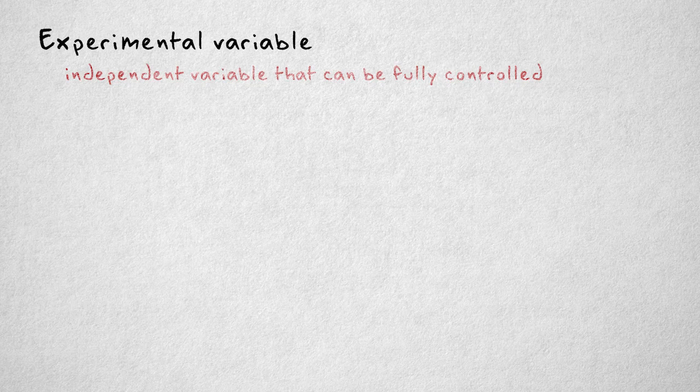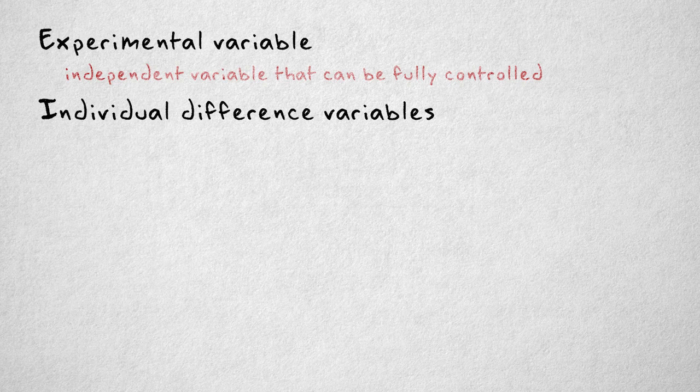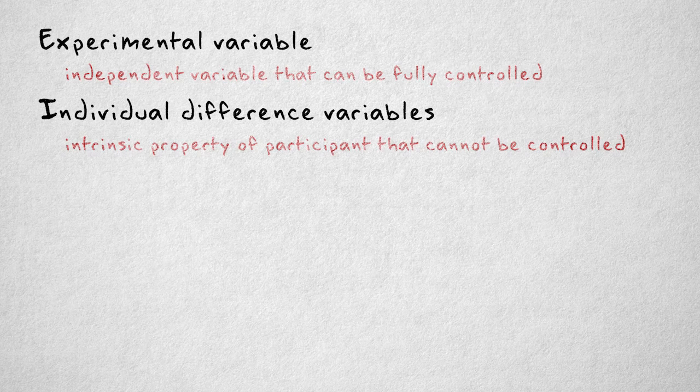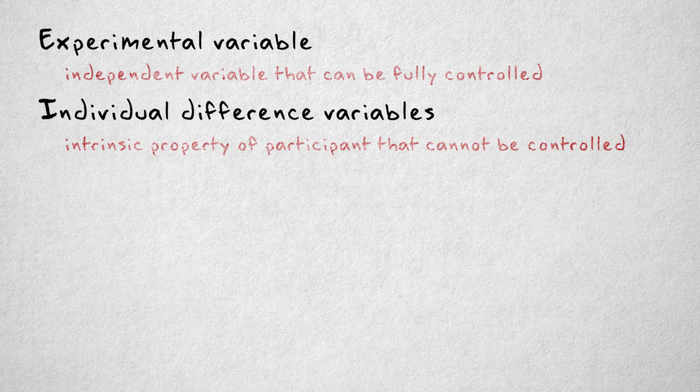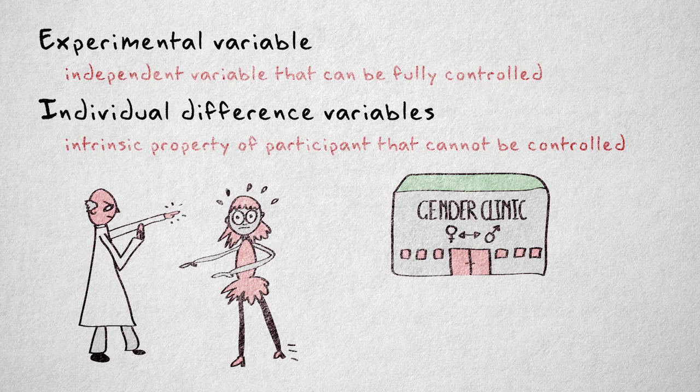Not all variables can be manipulated. Such variables are called individual differences variables, because they're an intrinsic property of the participant. Properties like age or gender, for example, are not under the researcher's control. We can't send participants to a gender clinic and ask them to undergo a sex change so that we can investigate the effect of gender on aggression.